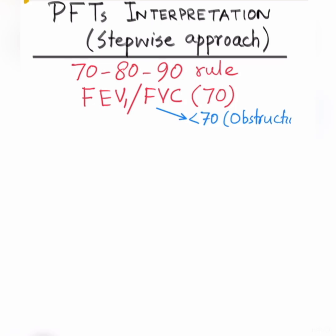It can be any kind of obstruction — reversible or irreversible. On the other hand, if the patient has a ratio more than 70, then there is no obstruction. However, we cannot say for sure that this patient has restrictive lung disease; we have a few more steps to cover to classify the patient as having restrictive lung disease.